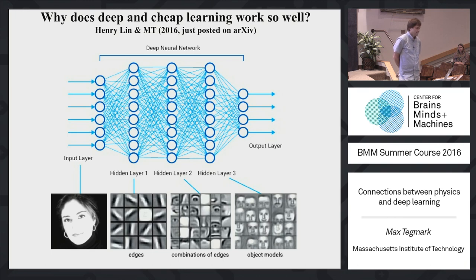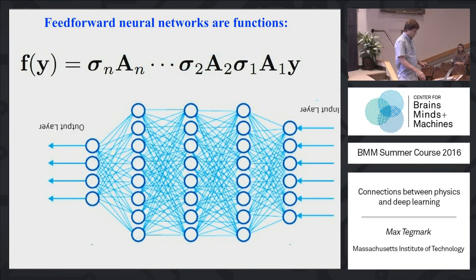But before we go there, let's remind ourselves what we mean by deep learning. A feedforward neural network is just a particular function where you send something in, an input layer, and something comes out. Feedforward neural nets are a very particular class of functions where you alternatingly multiply by some matrix and add some constants, and then do some simple nonlinear operation. So what we know empirically is that by just alternating linear stuff with simple nonlinear, you can do all kinds of very cool things.